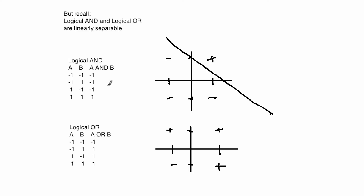In a similar fashion, we can see that logical OR is also linearly separable. Here are the positive examples and here's the negative one. I can draw a line right there that puts the negative example on one side and the positive ones on the other.